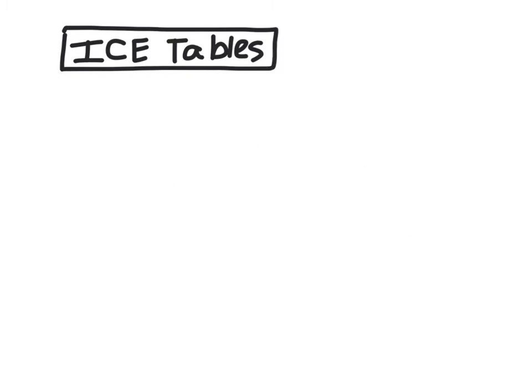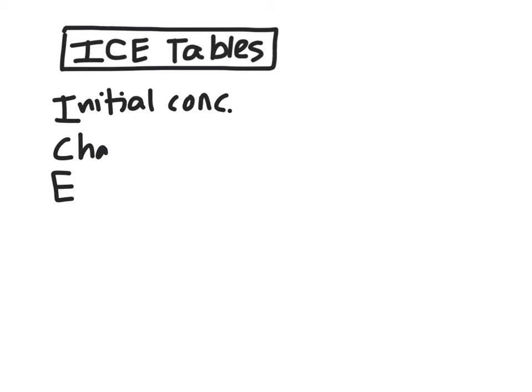We can use the equilibrium constant to calculate the relative concentrations of species at equilibrium, but to do so we often need something called an ICE table. ICE stands for Initial concentration, Change in concentration, and finally Equilibrium concentration.